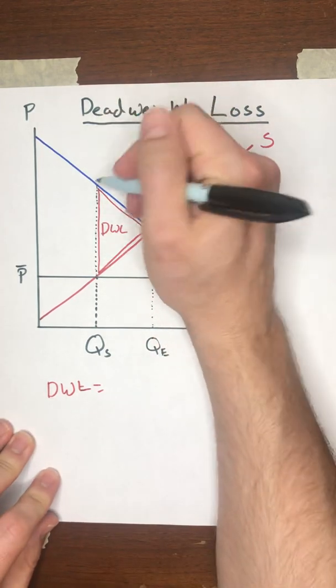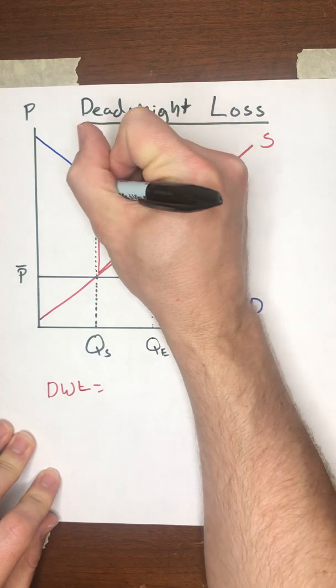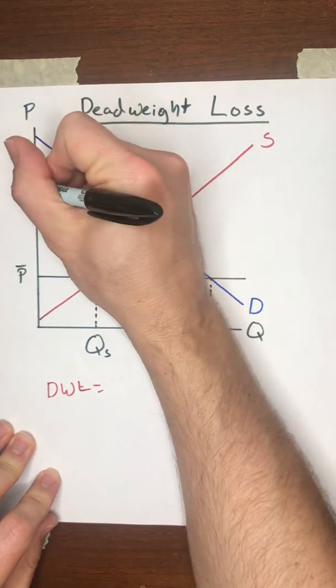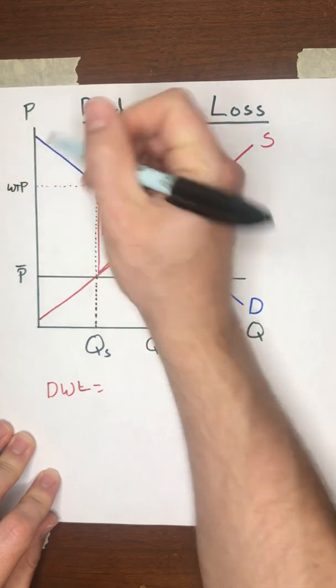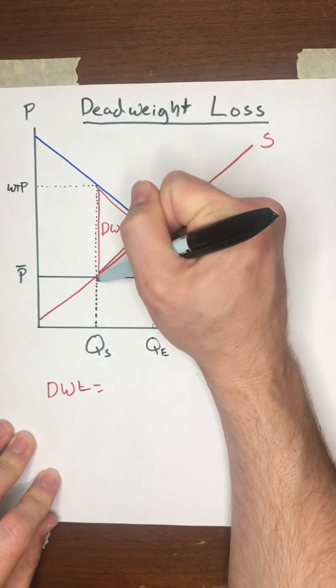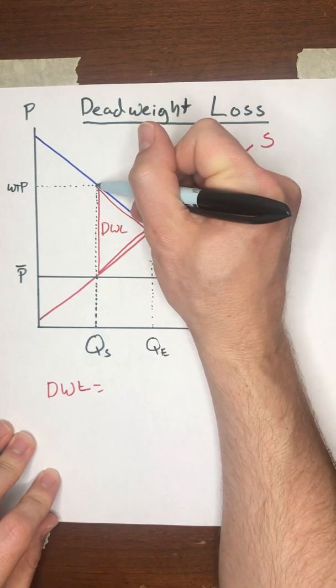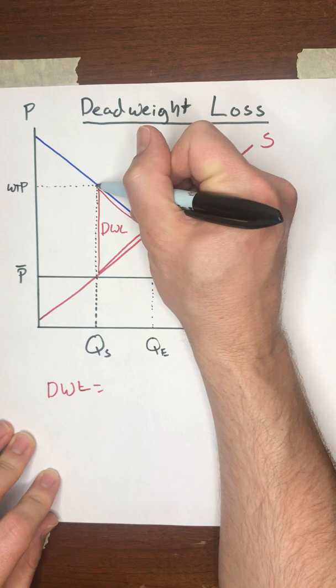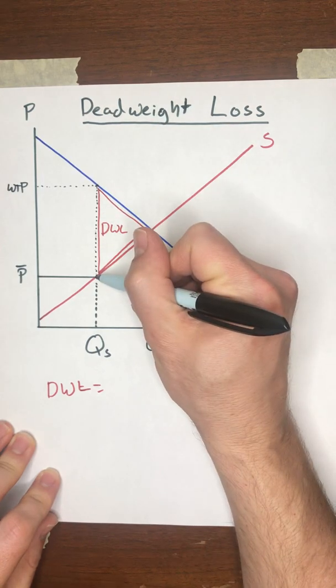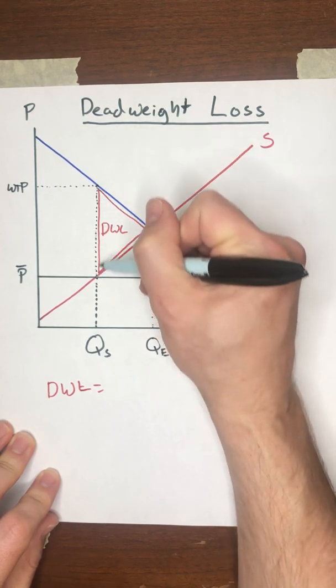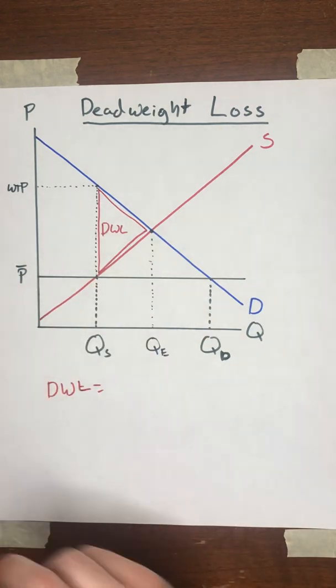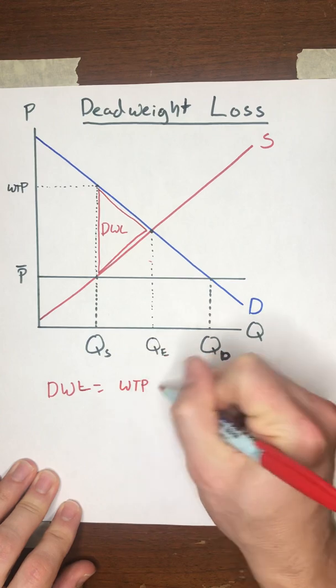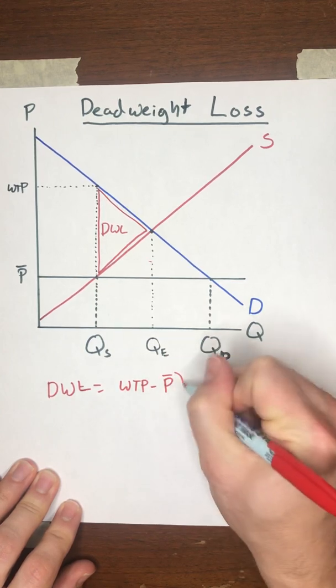Take QS, plug that into the demand curve, and wherever that bounces over to the Y-axis, that willingness to pay. The difference between the willingness to pay of the buyer on unit QS, the difference between that and the price that he actually has to pay, that's going to be the height of this deadweight loss triangle. So we'll write that in here. Willingness to pay minus P bar.